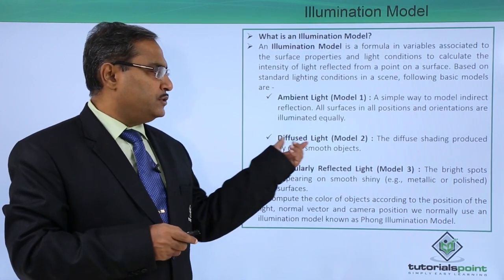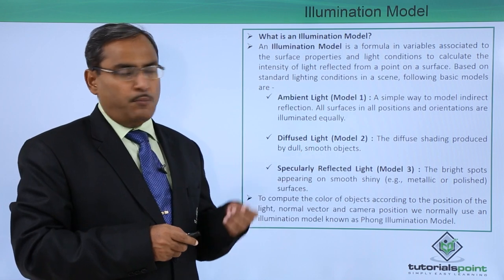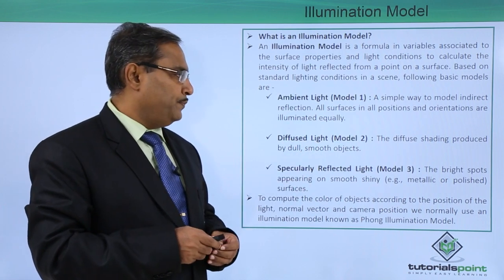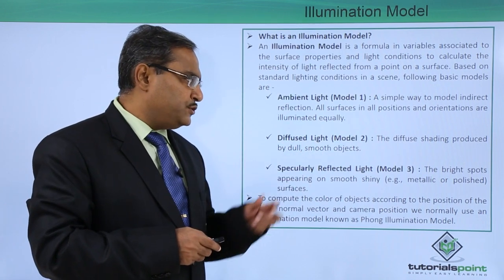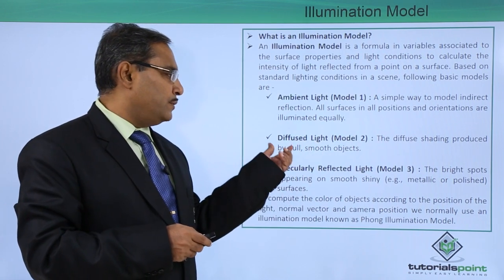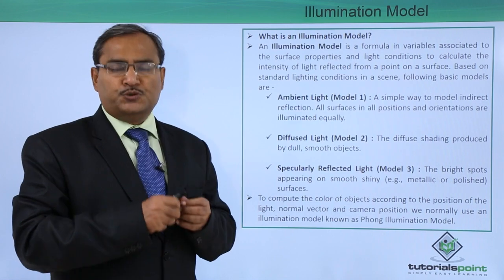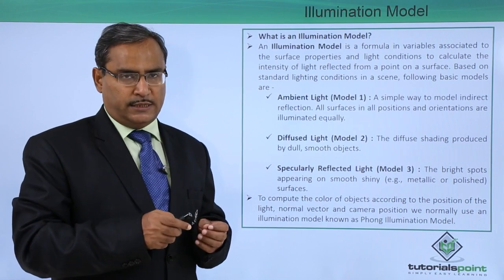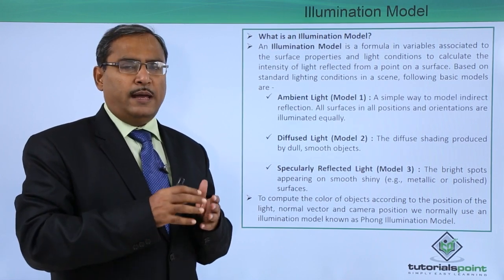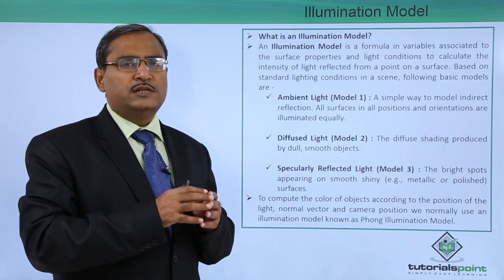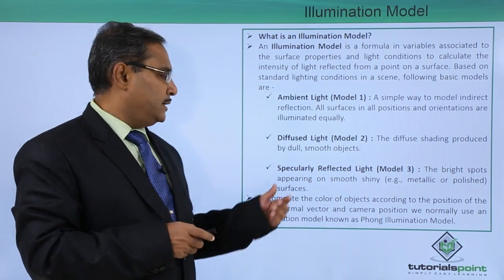The next one is diffuse light, model number 2. Diffuse shading is produced by dull and smooth objects.